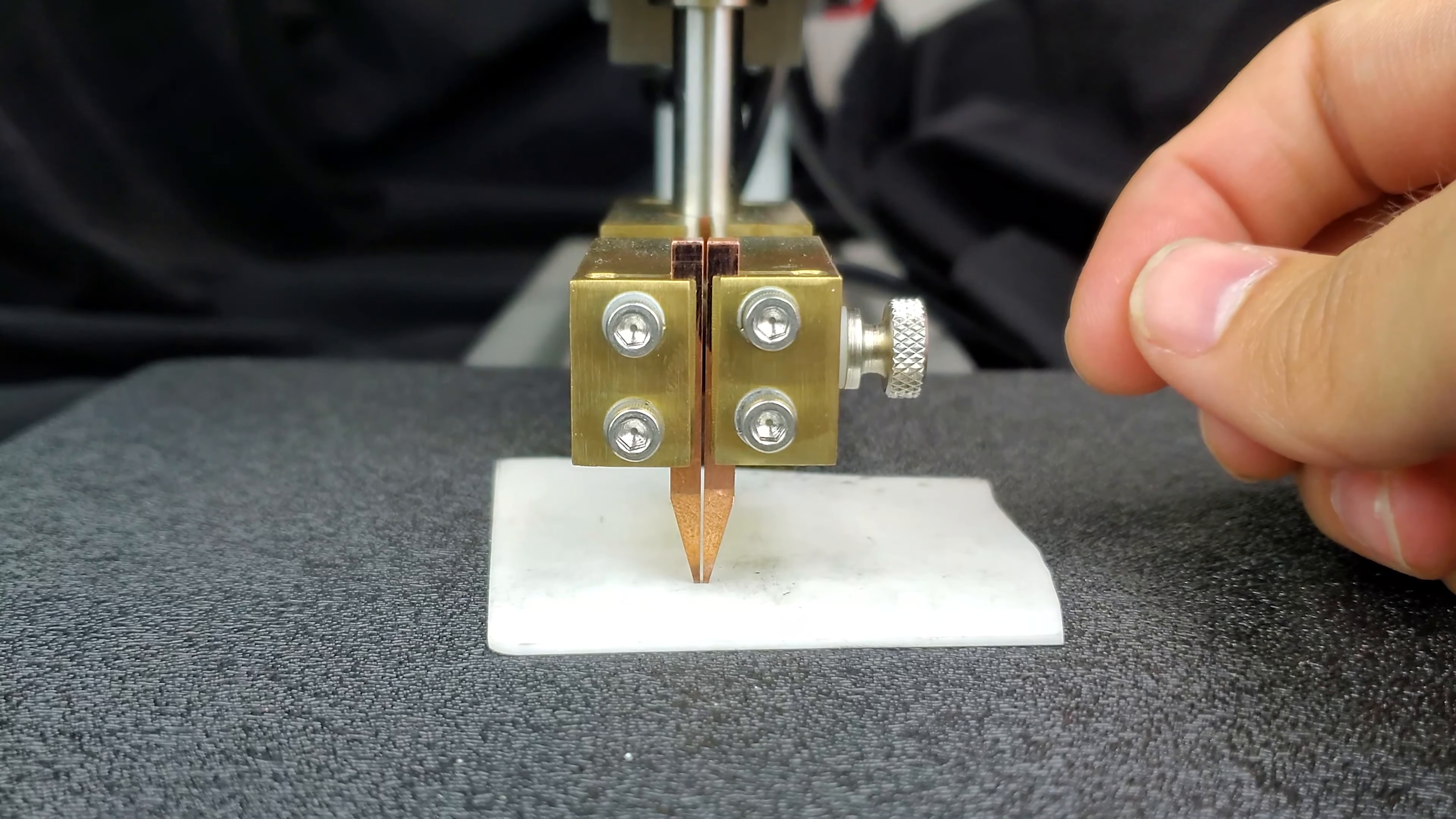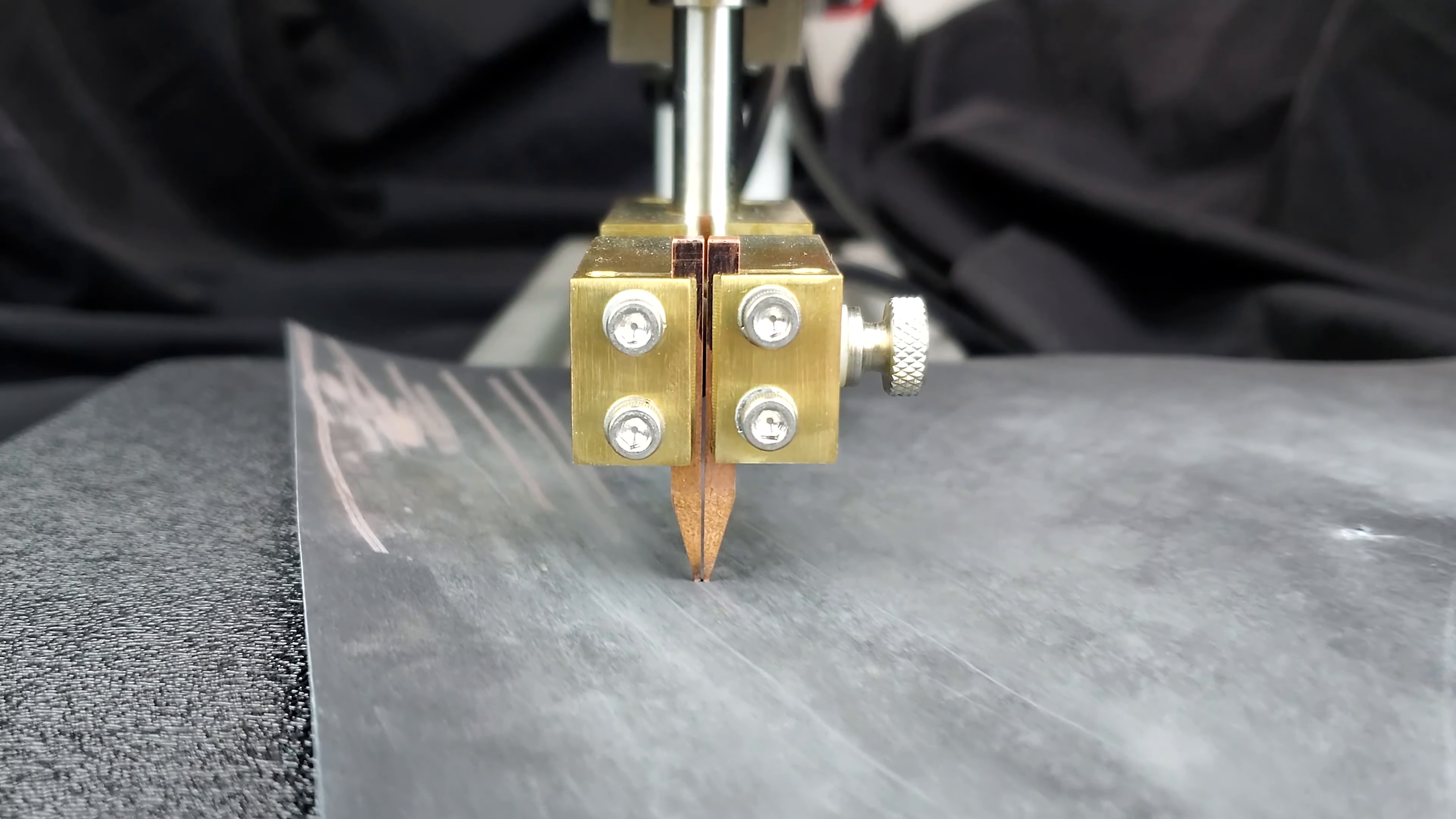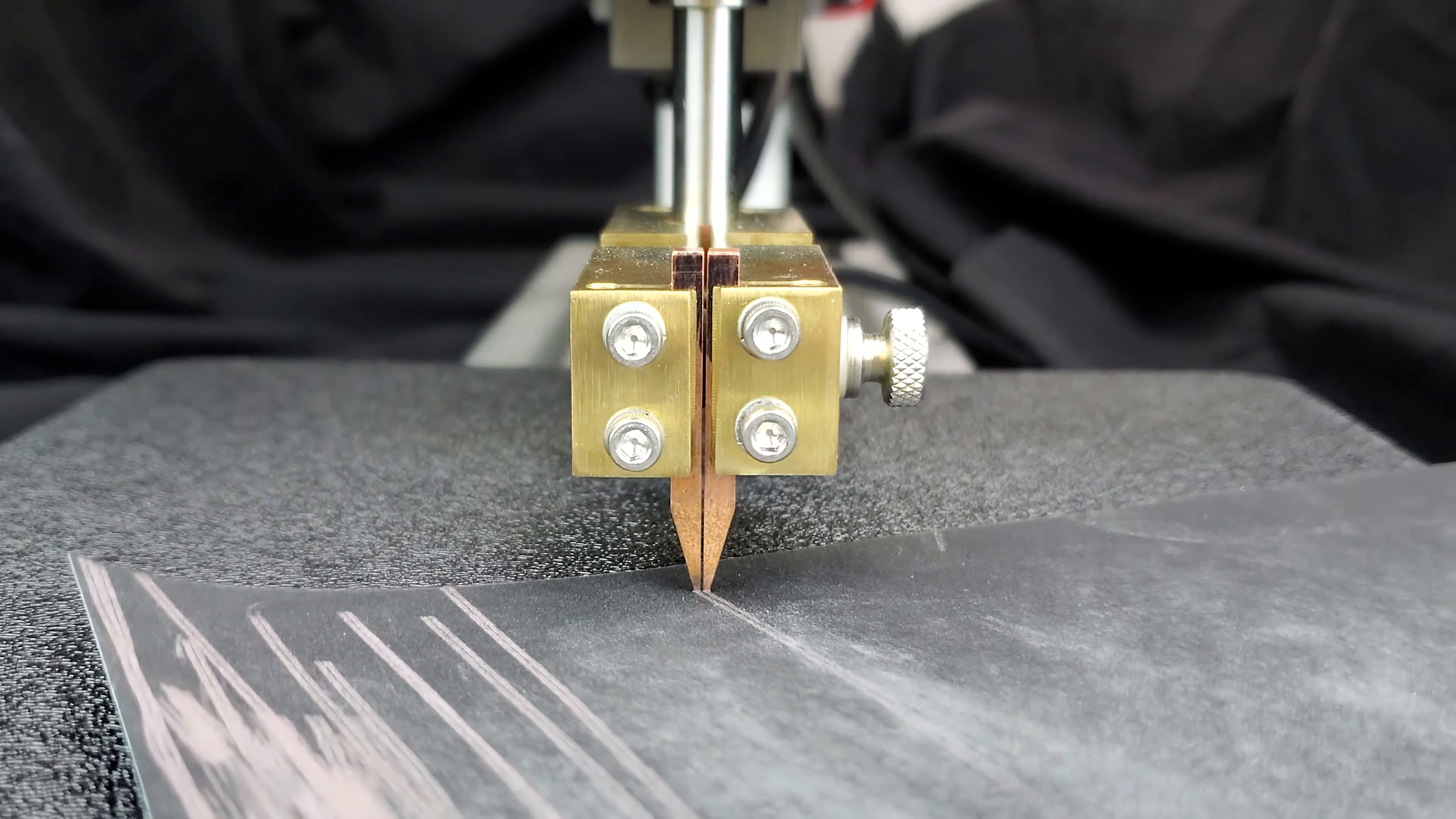Again, checking our work distance. And then, in order to maintain our electrodes so they both come down on the part evenly, we get some fine grit sandpaper. I'm using 600 here. I'm going to drag it across the electrodes.